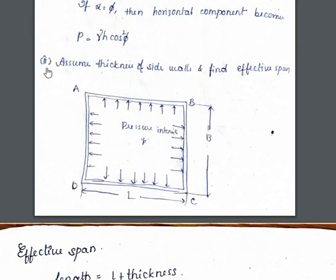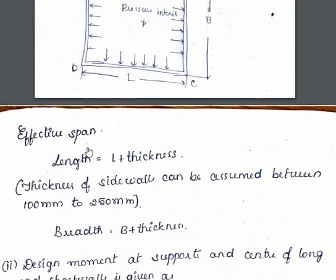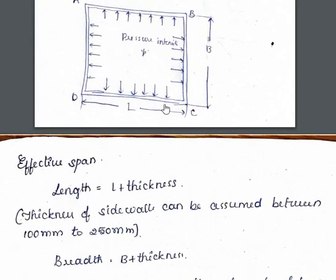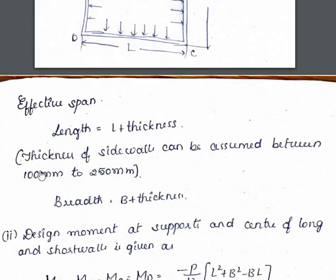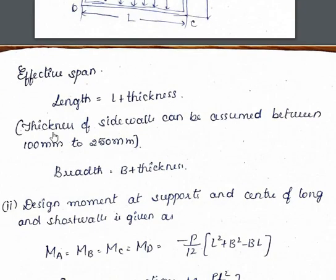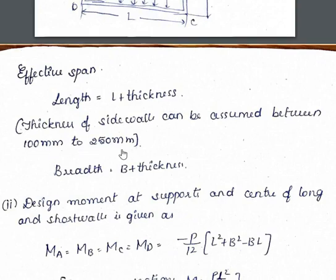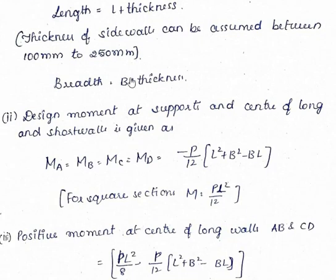Next, we assume the thickness of the side walls and find the effective span. For a cross-section of the bunker, the effective span equals the inner length plus one full thickness (half thickness on each side). The thickness can be assumed between 100 mm to 250 mm. The effective breadth is P plus the thickness, placing half thickness on each side.